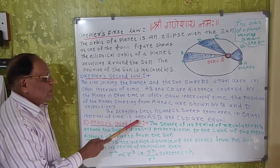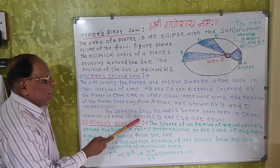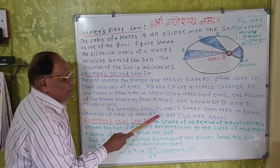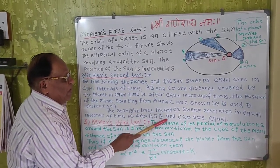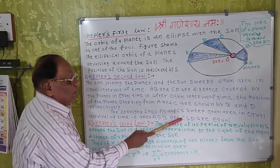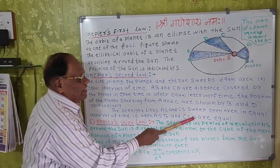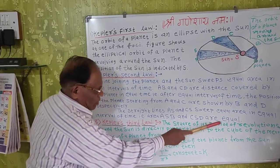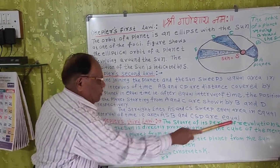That is, area ASB and area CSD are equal.